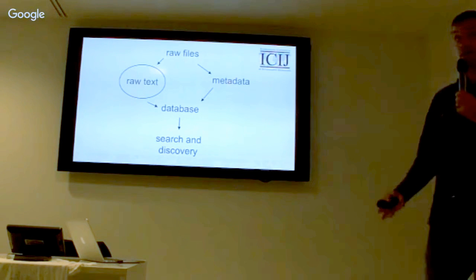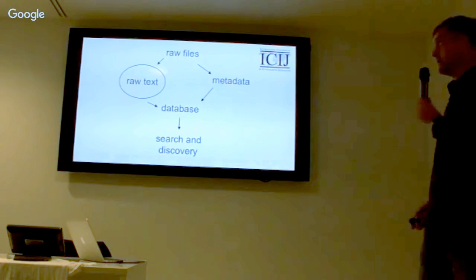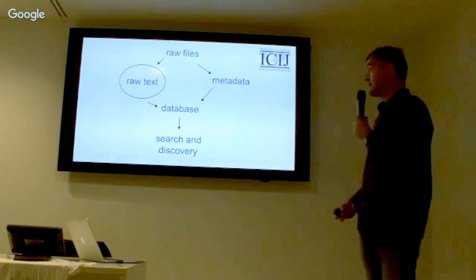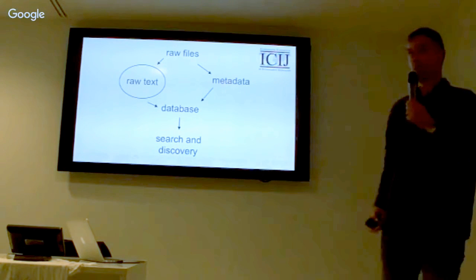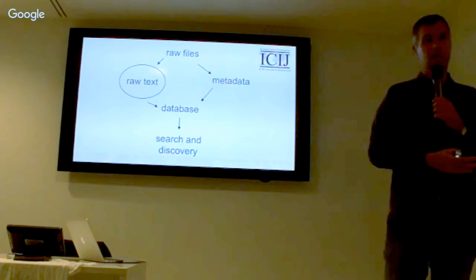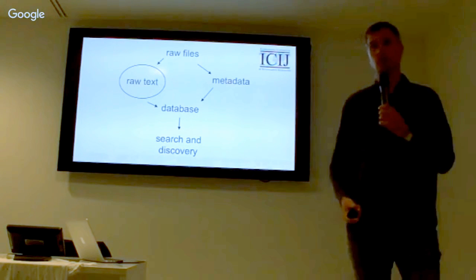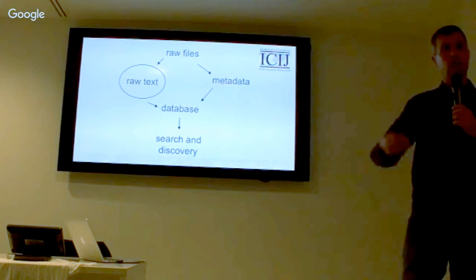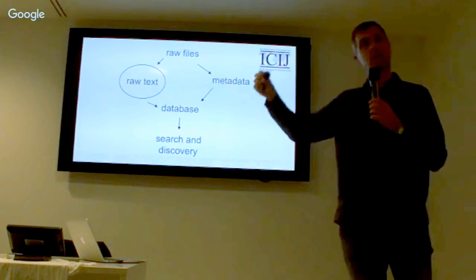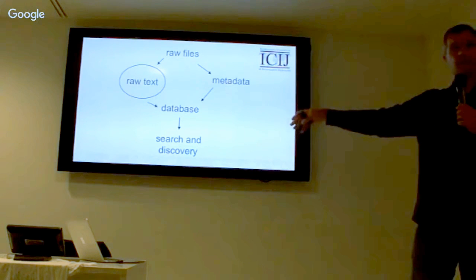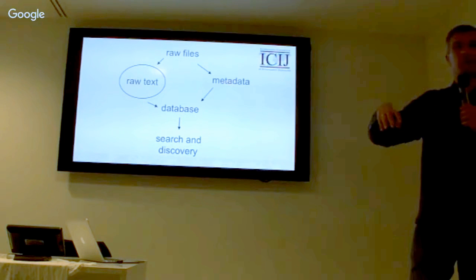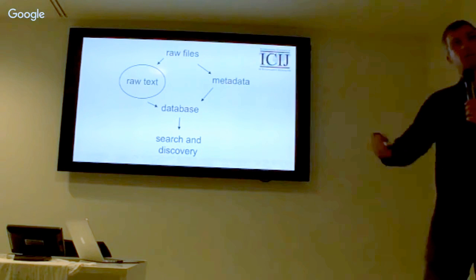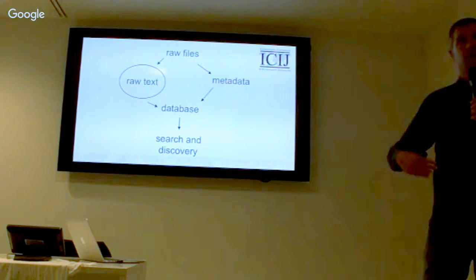What you get is raw files — just anything in any format. You need to decompile out of these raw files the raw text and metadata, bring it all into a database, then do search and recovery. A raw file could be an Outlook PST file, an Excel file, a Word document — anything. From an email for example, you need to find out who sent it to whom. You also need to understand the distinction between document types: an email carries different weight than an official signed scanned document.